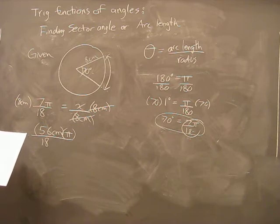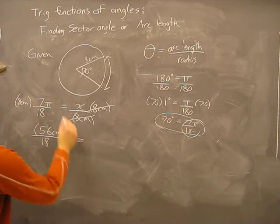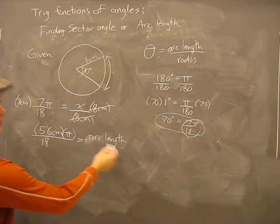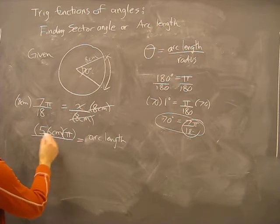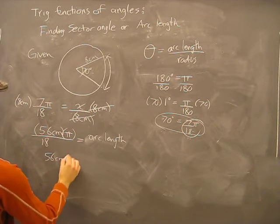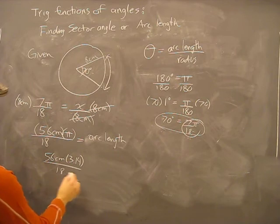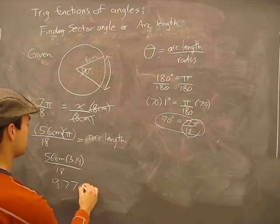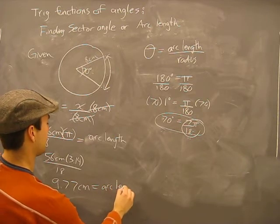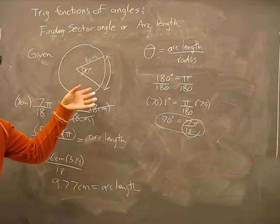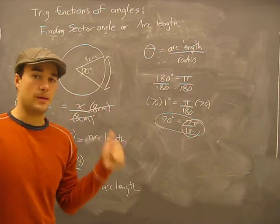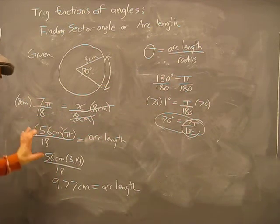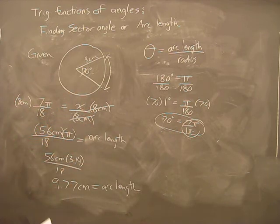So x, the arc length, equals 56 pi over 18. Multiplying 56 times approximately 3.14 and dividing by 18, this works out to about 9.77 centimeters — and the centimeters are still there as the unit. That's the arc length. To summarize: two steps — convert degrees to radians, then use the arc length formula with simple algebra to solve.